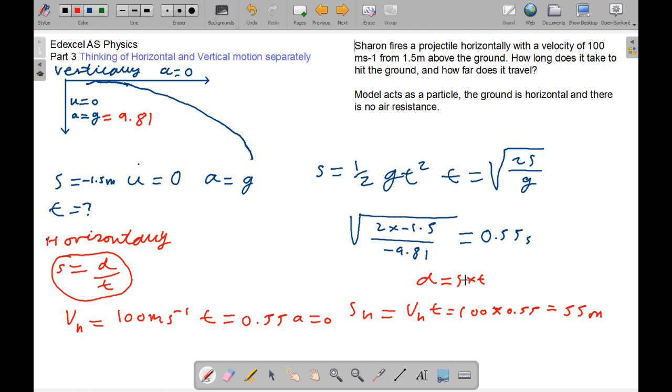Now, we can rearrange to define distance. So, d equals s times t, and then vh is 100 ms minus 1, t is 0.55 seconds, and a is 0. So, sh is the horizontal velocity times t, 100 times 0.55, which is 55 meters.